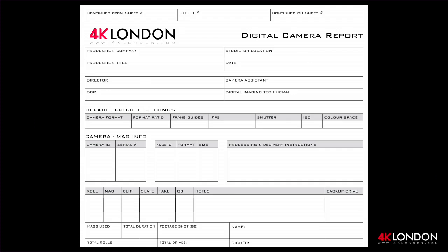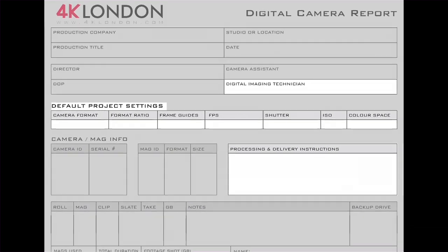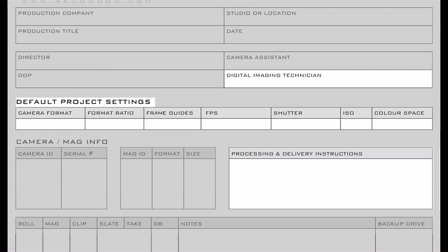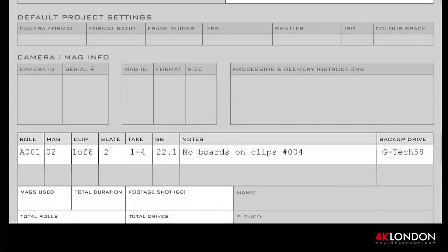Digital Camera Report: the route of a DIT is not a determined path — the majority of DITs come from a camera department background where they are familiar with taking camera notes. Camera report sheets act as a safety check for the DIT as they are checking the data, helping identify any problems which can be relayed to the DOP in production. The camera report sheet is set up for a digital shoot, highlighting the type of camera format being used and the default project settings, which include aspect ratio, frame guides, frames per second, shutter information, ISO, and colour space — similar to the types of film stocks traditionally used. This form also details processing and delivery instructions. The bottom of the report sheet shows how much data has been shot and which drives the information has been backed up to, with drives clearly labelled so they can be easily distributed.